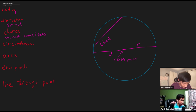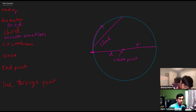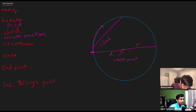Now we're going to move on to the circumference. The circumference is going to be that little blue outline — it's basically the perimeter. In quadrilaterals you have a perimeter; circumference is the same idea. It's whatever surrounds the circle, and it can be represented with the equation two pi r, or pi d.